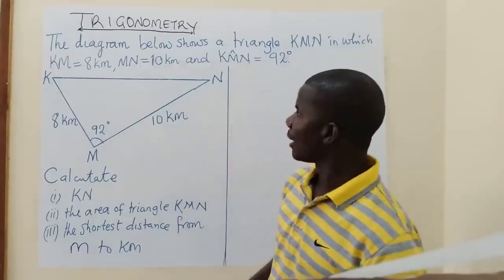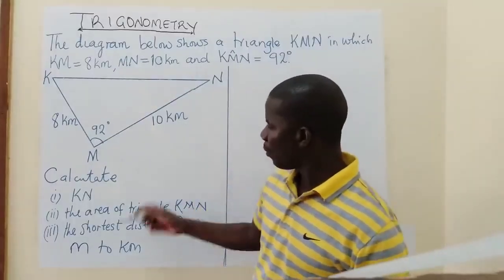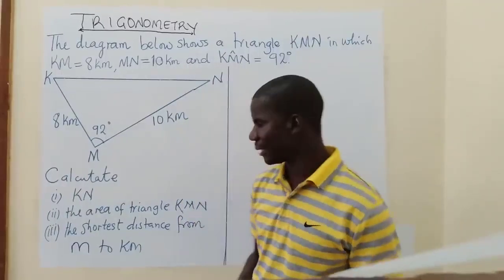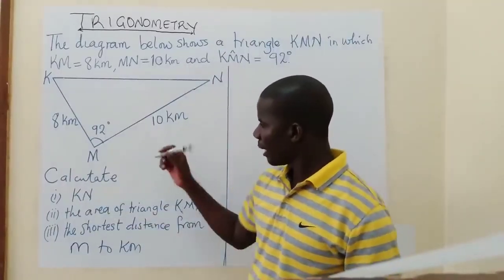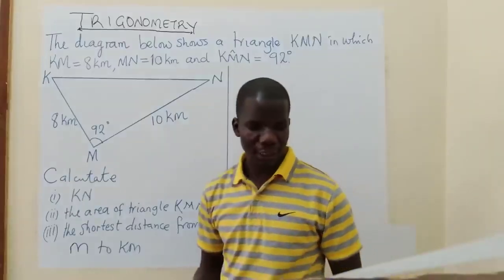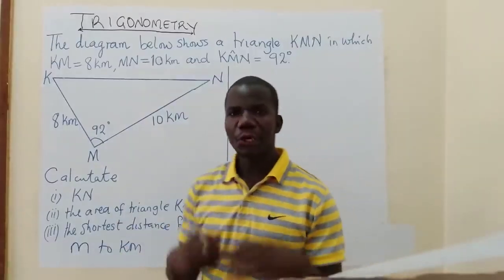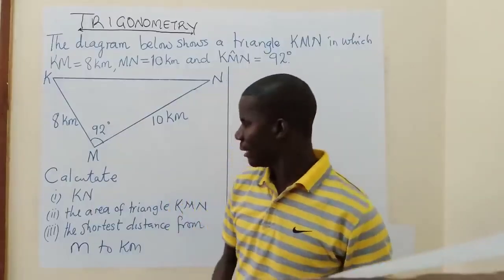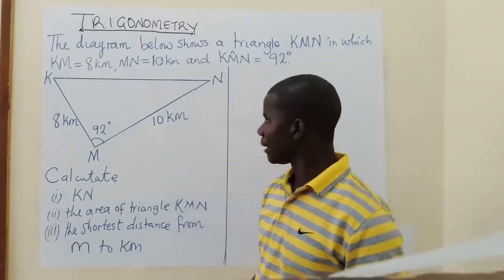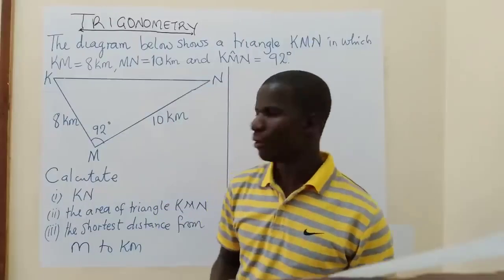Welcome to this lesson where we are still looking at trigonometry. In this lesson, we want to see how these three concepts are combined in one question. If you have been following our videos, you will realize that in the previous lessons we covered these items individually. This is one of the questions from the first exam paper, 2019 November. Trigonometry is one of the topics that comes in Section B as a standalone question.